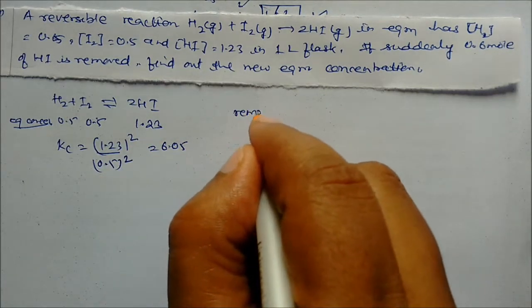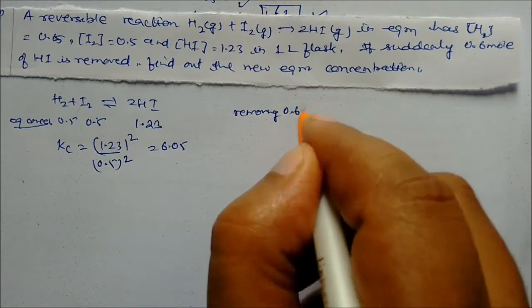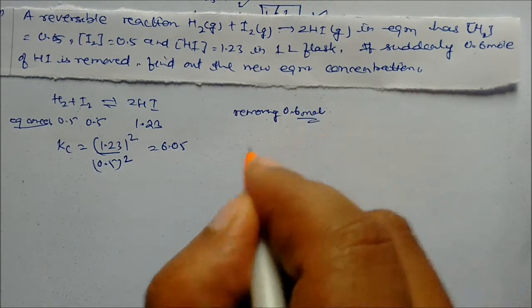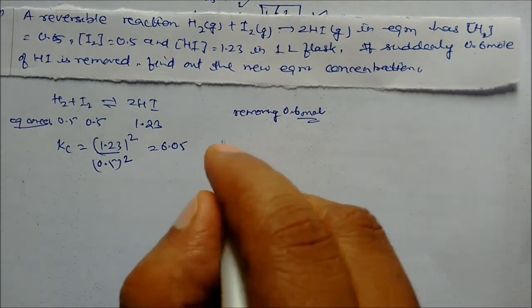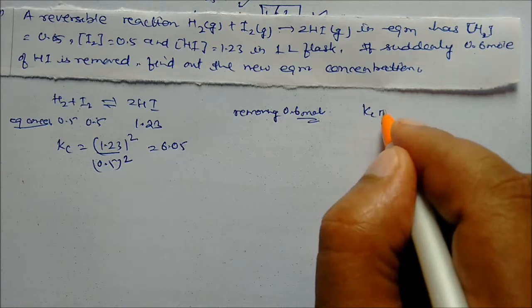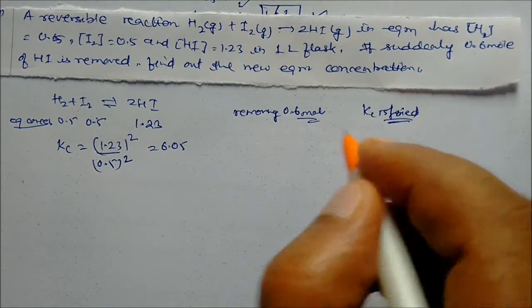On removing 0.6 mol of HI, Kc will not change — Kc is fixed at 6.05.